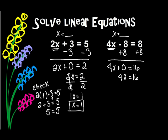Now, once again, when I have a number and a letter next to each other, it means to multiply. So I'm going to do the opposite of multiplying, which is dividing. So I'm going to divide by 4 on both sides of the equal sign. 4 divided by 4 is 1, so I have 1x. And 16 divided by 4 is 4. Well, 1x is the same thing as x, so I get x equals 4.